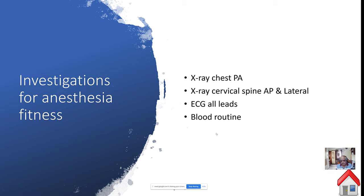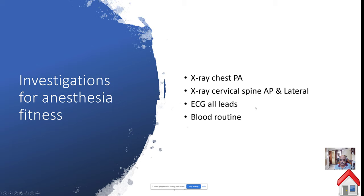For investigations, you need to take an X-ray chest — not just to diagnose the foreign body but to confirm the patient is fit for general anesthesia. Take X-ray cervical spine AP and lateral view to look for cervical spondylosis, because during rigid esophagoscopy in a patient with cervical spondylosis you risk fracture of the cervical spine and cord compression. Also take ECG and blood routine for anesthetic fitness.